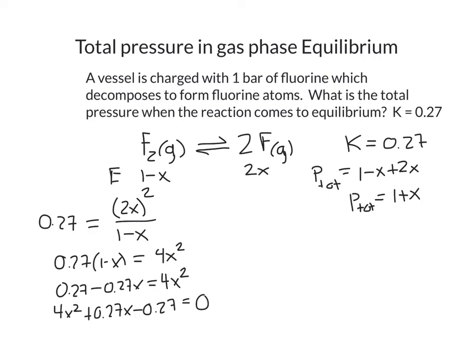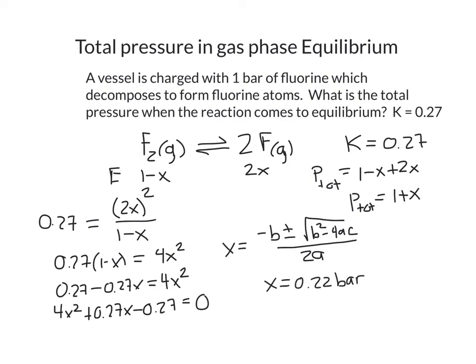Using the quadratic formula x equals negative b plus or minus the square root of b² minus 4ac, all divided by 2a. In this problem a equals 4, b equals 0.27, and c equals negative 0.27. Plugging those values into the calculator and solving gives x equals 0.22, with units of bar because this is a Kp.